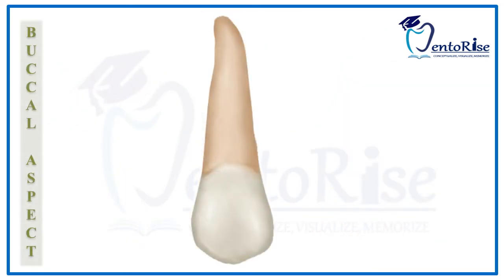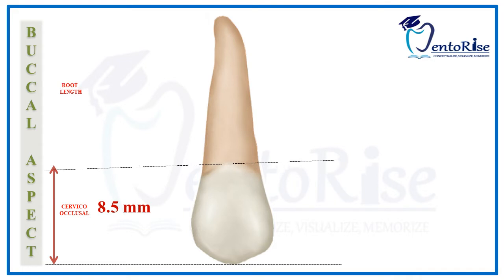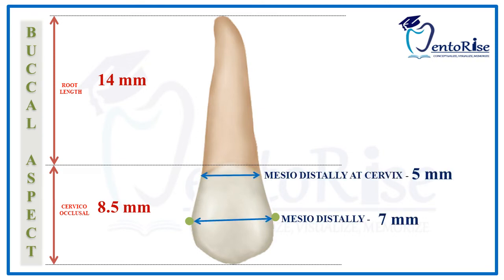Starting with the buccal aspect, considering the dimensions: the cervical-occlusal length of the tooth, that is the distance from the tip of the cusp till the highest point on the cervical line, is 8.5 mm. The root length is 14 mm. The mesiodistal dimension at the crest of contour is 7 mm and at the cervix is 5 mm. These dimensions are similar to those of the permanent maxillary first premolar.